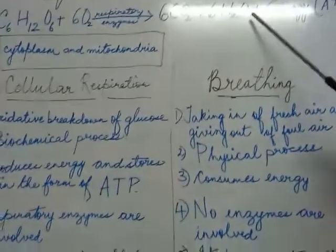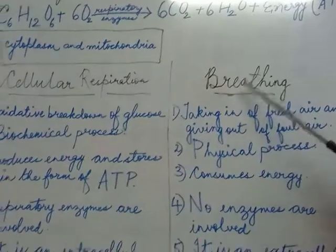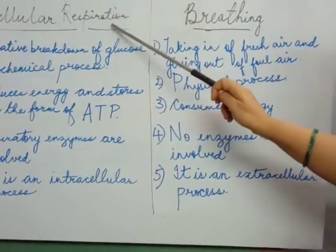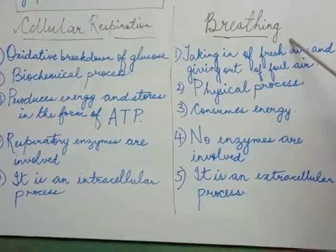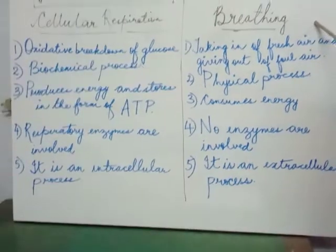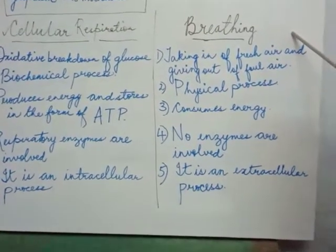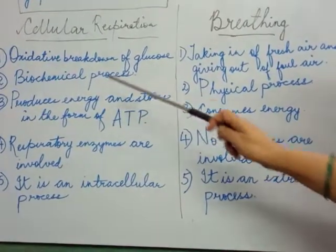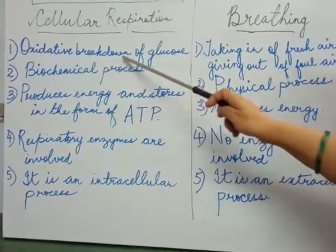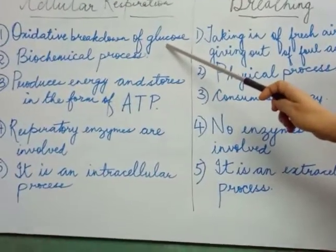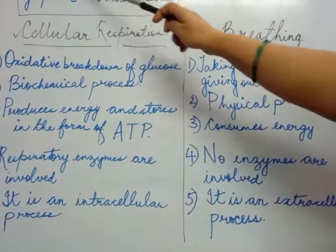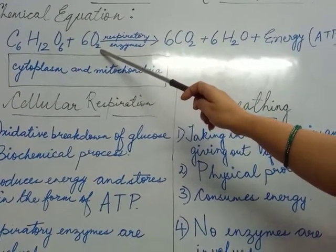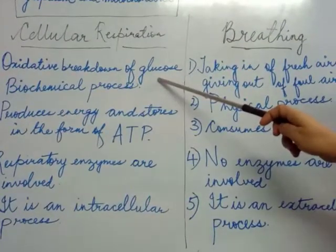Now I will teach you the differences between cellular respiration and breathing — that is, internal respiration versus external respiration. Point number one: cellular respiration is an oxidative breakdown of glucose. Here in the equation, glucose is broken down by oxygen, that is why it is called the oxidative breakdown of glucose.